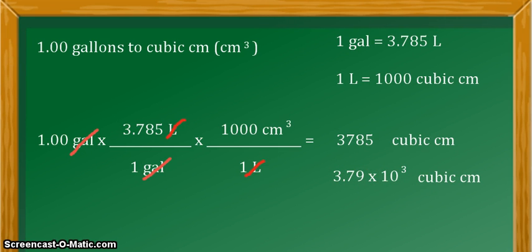So our final answer is 3.79 times 10 raised to the power of positive 3 cubic centimeters. And that is equivalent to 1.00 gallons. Thank you for listening and continue learning.